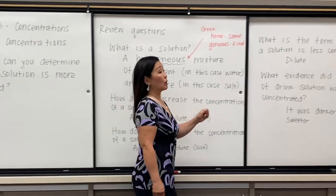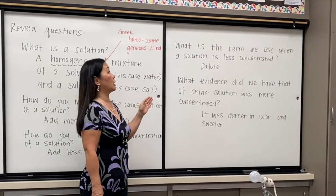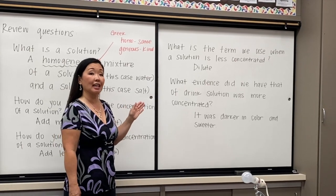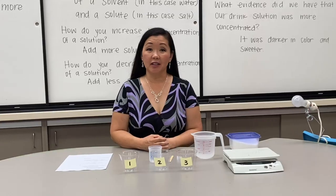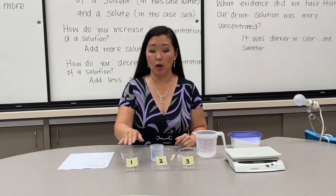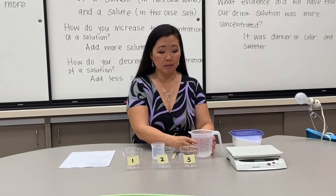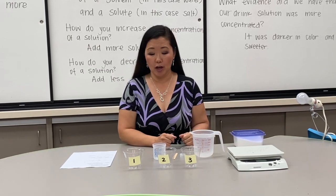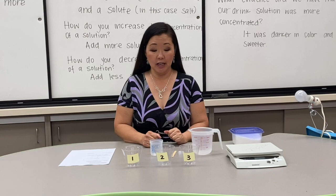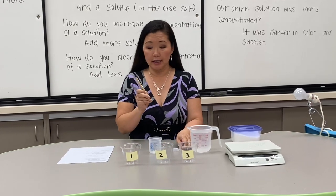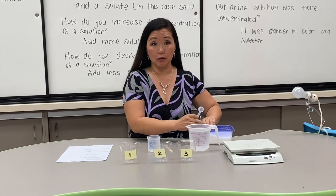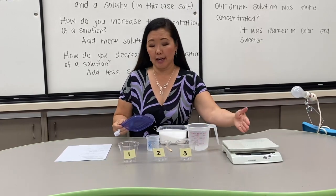The next question is: what is the term we use when a solution is less concentrated? That means it's dilute or diluted. For this experiment, I have three cups labeled one, two, and three, a measuring cup of water, a beaker to measure the water, a stir stick, a teaspoon to measure the salt — which is going to be our solute — and a scale.